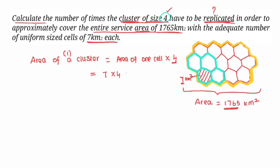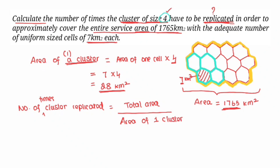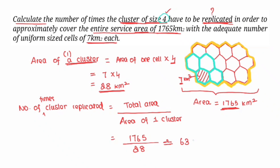Area of 1 cell is 7 km², so 7 into 4 is 28 km². One cluster area is 28 km². Now, the number of times the cluster is replicated equals total area divided by area of 1 cluster. Substituting: 1,765 divided by 28 gives approximately 63 times.